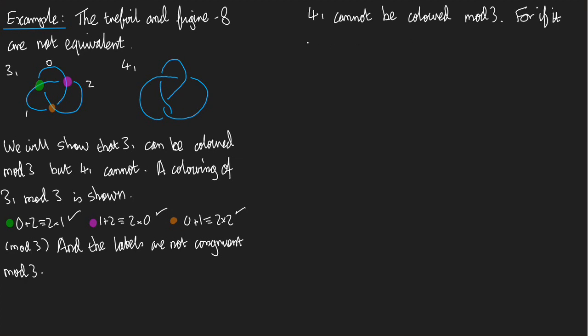then we could color this diagram. If it could be colored, we would be able to color this diagram. We would be able to find a label A, a label B, a label C, and a label D that form the coloring of the diagram.